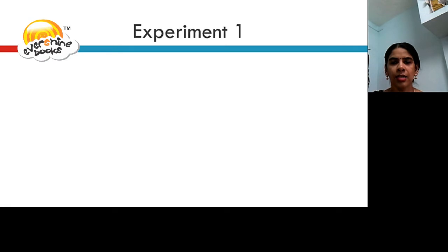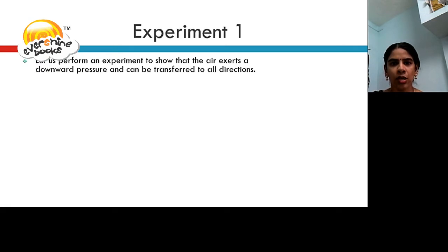Let us learn the experiment 1 to show that the air exerts a downward pressure and can be transferred to all directions. Fill a glass with water up to the brim without any air bubbles.